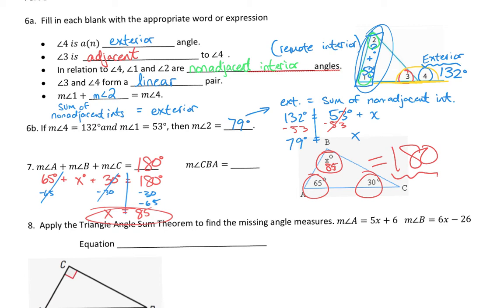The measure of angle B is 85 degrees, and they got fancy using the three-letter name — angle CBA — same as angle B, just a more specific name, and it's 85 degrees. You've seen the two big things here: the exterior angle theorem on number 6A and B, and then the interior angle theorem. So you should know how to do interior and exterior angles.